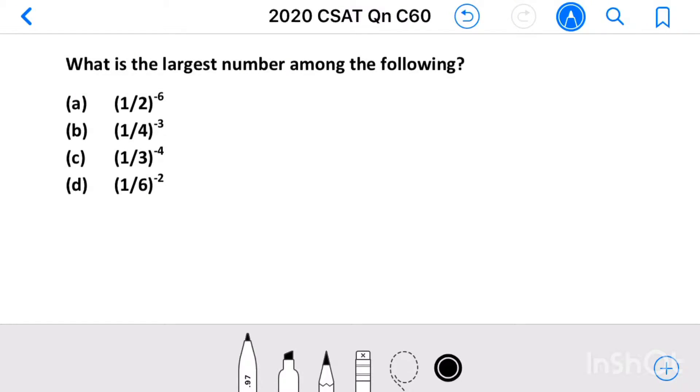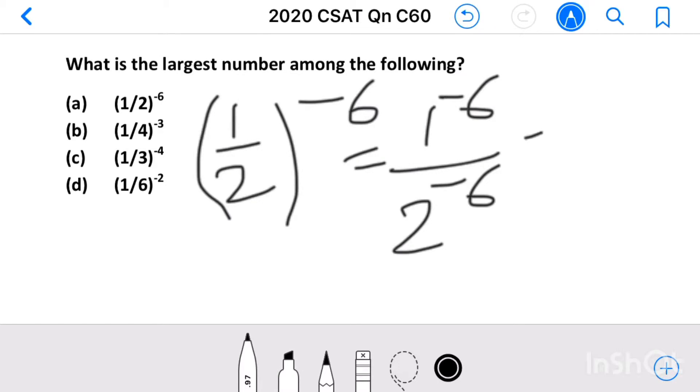Question number 60: What is the largest number among the following? Here first number is 1 by 2 power minus 6. This we can write as 1 power minus 6 divided by 2 power minus 6.